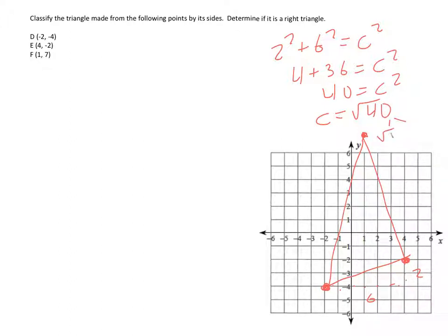So it ends up being the square root of 40, which we can reduce. Square root of 40 can be the square root of 4 times the square root of 10, which would be 2 square root of 10. So I can simplify this length to 2 square root of 10. So that's that length.